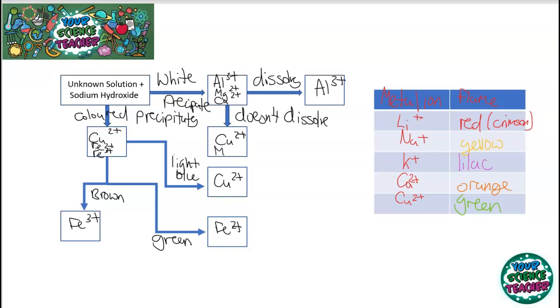And to distinguish between calcium and magnesium, what you could do is you could do a flame test. And obviously, calcium, we know gives an orange flame and magnesium would not give a flame. So this is just an alternative to flame test is adding sodium hydroxide.